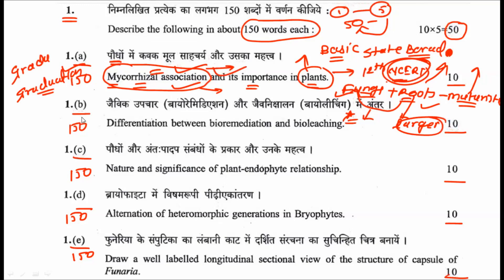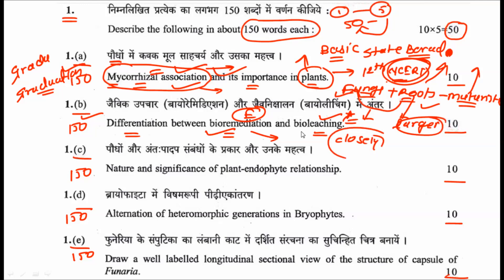The second sub-question asks for differentiation between bioremediation and bioleaching. These two processes are very closely associated but have certain basic differences, and you have to describe those differences in your answer. You will get 10 marks for this.